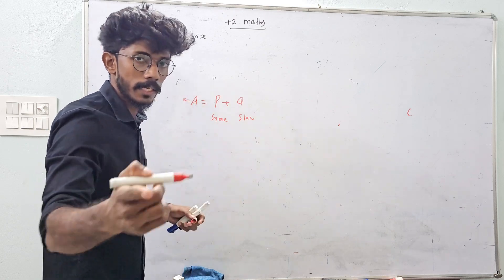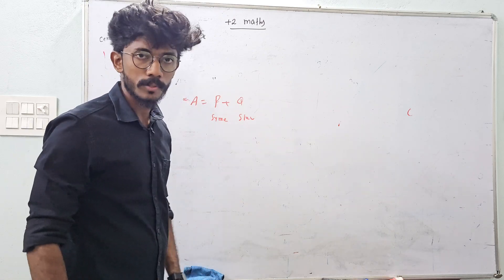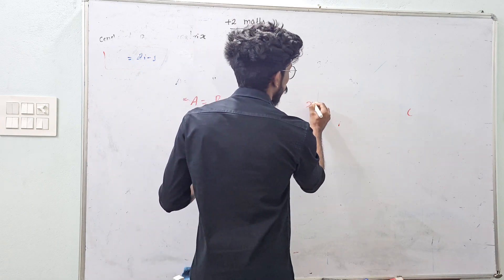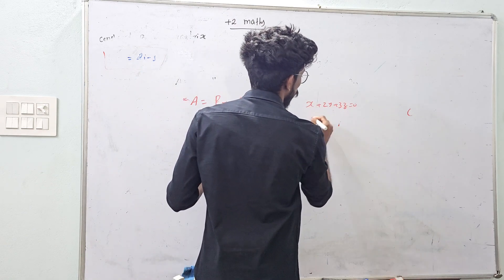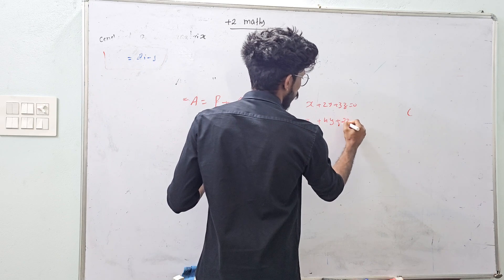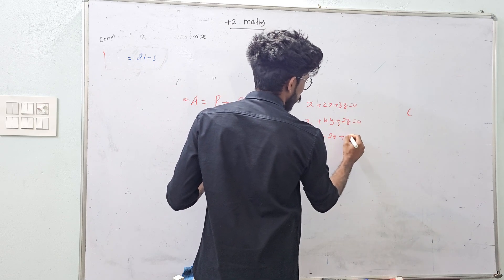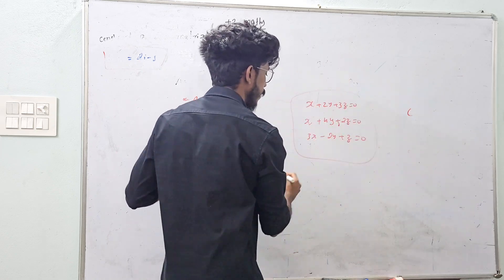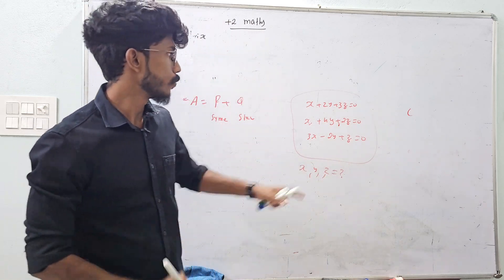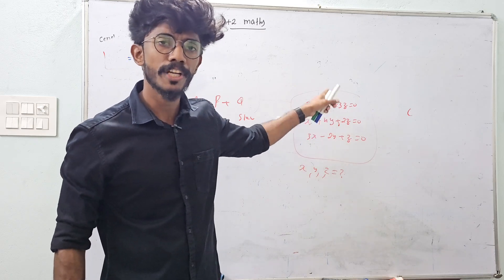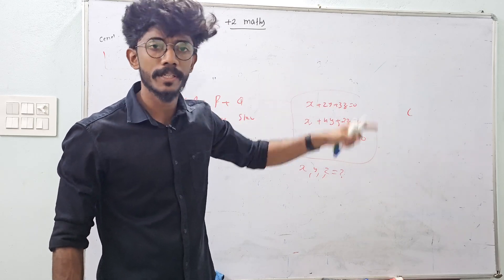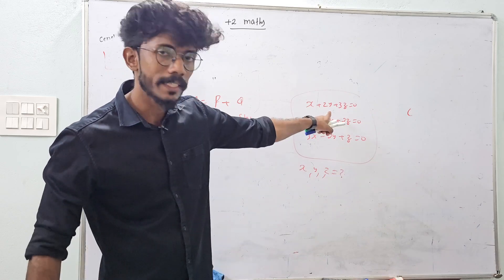Let's take a look at the description. It's very important. We have: x plus 2y plus 3z equal to 0; y plus 4y plus 2z equal to 0; x plus 2y plus z equal to 0. This equation — solve for x, y, and z. It's a 100% exam problem.